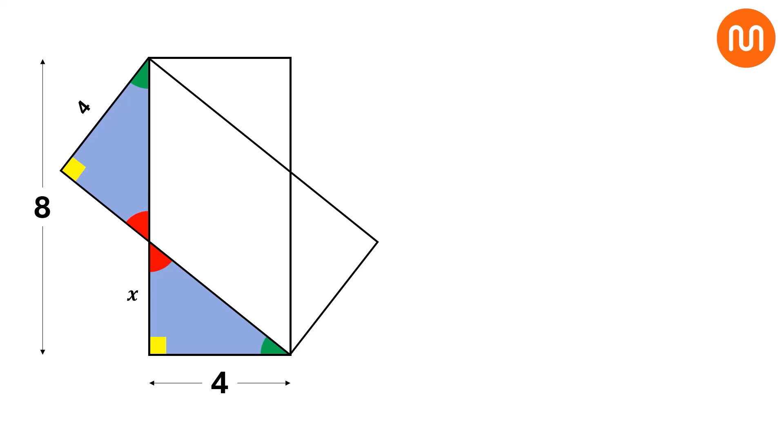Now, look at the hypotenuse of the upper triangle. Its length is 8 minus x. Since the bottom triangle is congruent to the upper one, its hypotenuse must also be 8 minus x. Using the Pythagorean theorem on the bottom triangle, we set up the equation.